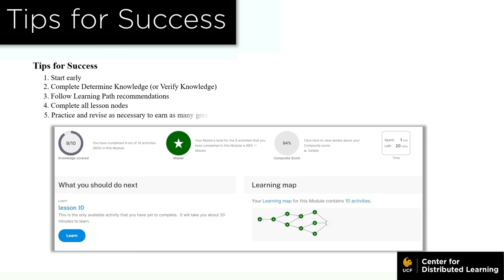Number five, mastery. Try to earn as many green stars as possible by practicing and revising each lesson node until you reach a solid understanding of material.